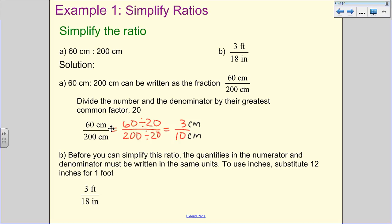For B, it's already as a fraction, but we need to be careful. We need to make sure that the quantities in the numerator and denominator are written in the same units. So right now we have 3 feet and 18 inches, not the same units. So what we're going to do is we're going to realize, we're going to remember that 12 inches is 1 foot. So we're going to do some changing there.